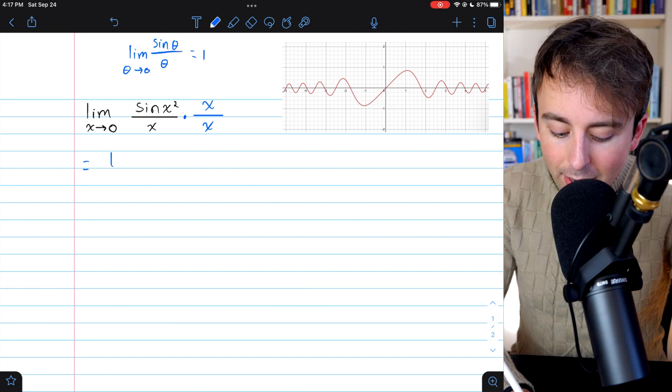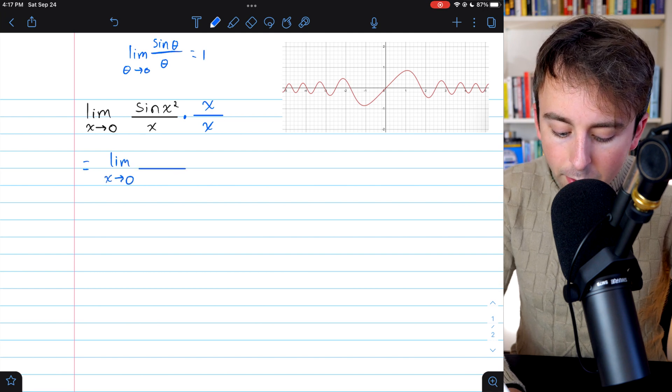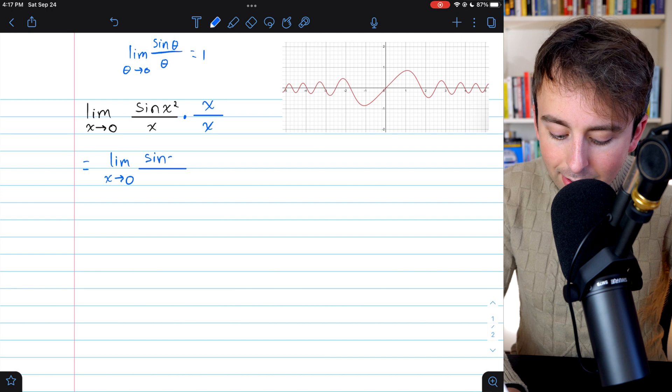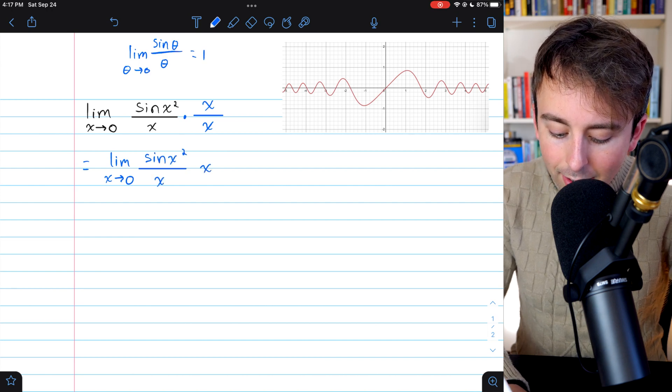So what we have now is the limit as x approaches zero of sine of x squared times x, and we've got x squared in the denominator.